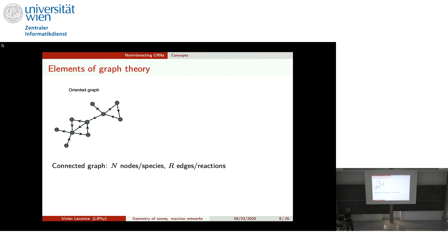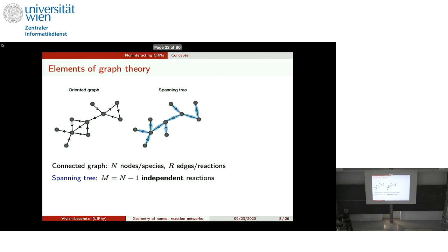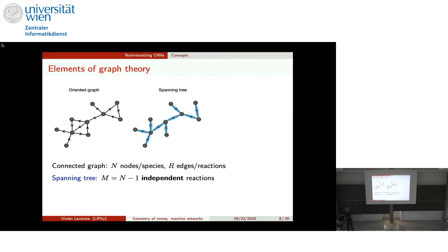We consider a connected oriented graph, without loss of generality, with N nodes and R edges. The first concept I introduce is the spanning tree: a subset of reactions with no loop that still covers every node. It is not unique, but it always contains the same number of edges. The spanning tree is a maximal set of independent reactions — in any loop, the reactions are not independent of one another.